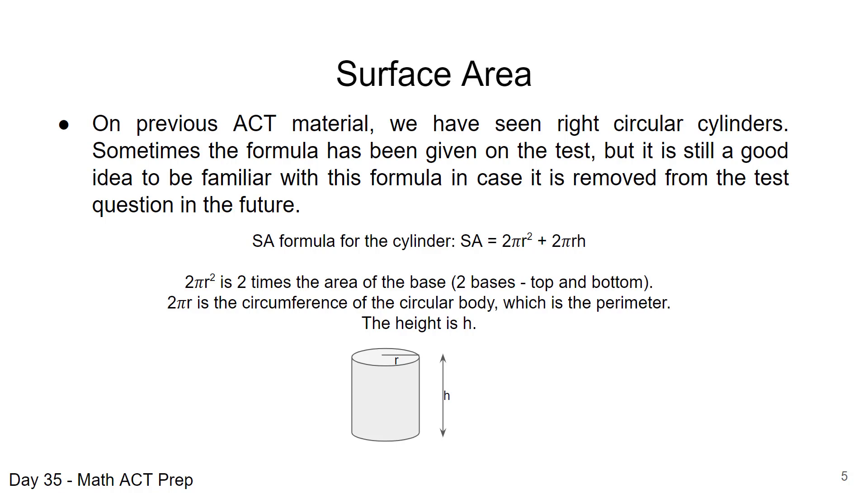So when we're looking for that surface area, we want to take each end of that cylinder, the two circles, and to find the area of a circle, it's pi r squared. In our formula, we have surface area equals 2πr² because we have two ends, the top circle and the bottom circle.